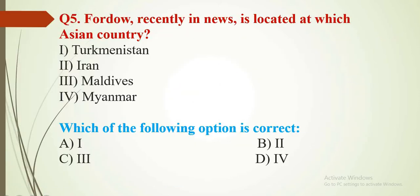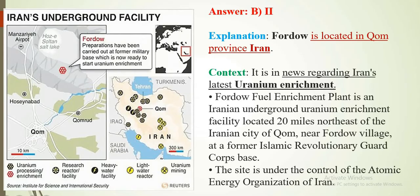Question number 5: A recently-in-news site is located in which Asian country? Four names have been given. It is located in Iran, so the answer is B — Iran. The map is shown. This site is located in Toom province of Iran and is in the news regarding Iran's latest uranium enrichment. The site is under the control of the Atomic Energy Organization of Iran.